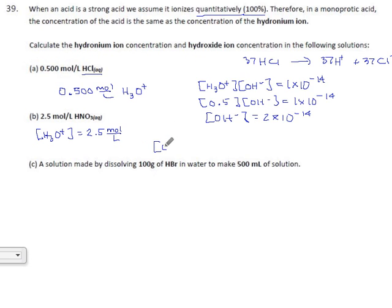And the hydroxide, I'm going to do this a little faster because I think you've already had some practice with this formula. The hydroxide concentration will be 10 to the minus 14 divided by 2.5, which I believe is 4 times 10 to the minus 15. That's moles per liter of hydroxide.